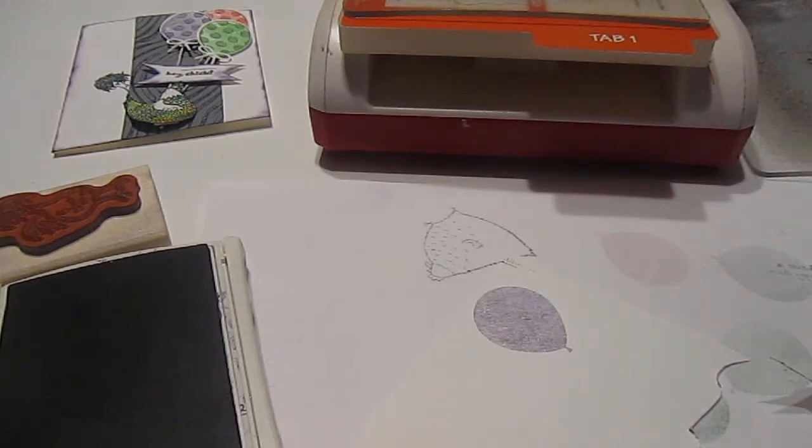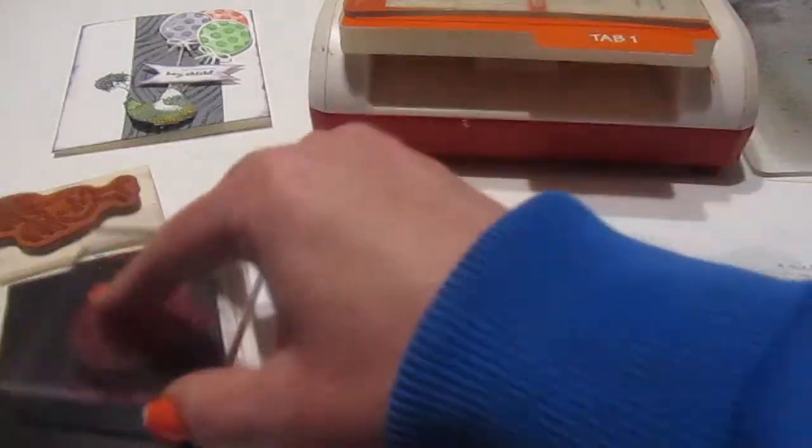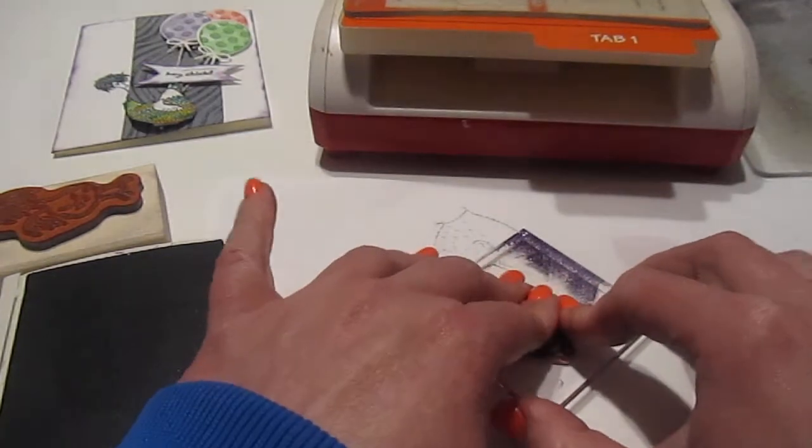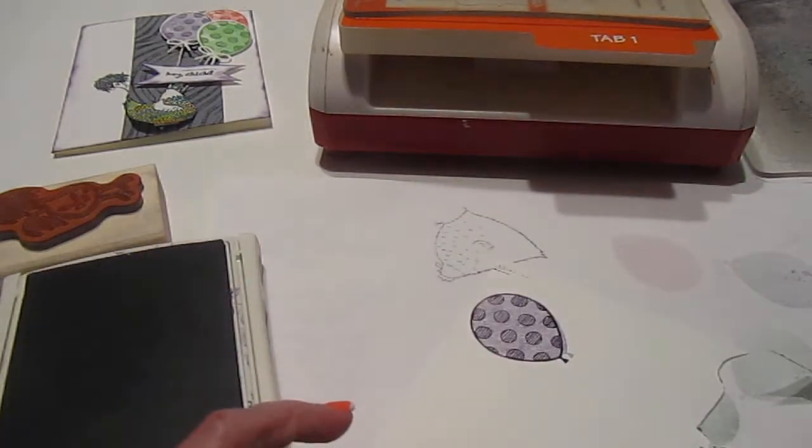Then once I'm done with that, I take the balloon top, the one that I want as a design, and I put it on top and then I layer it right on top. So it looks like that.